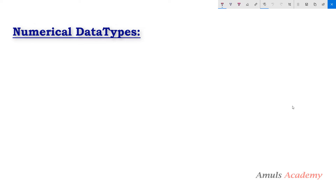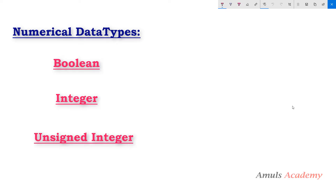Here we will talk about the numerical data types. There are 5 basic numerical data types: boolean, integer, unsigned integer, float, and complex. I will show you the complete list of data types present in the NumPy library.